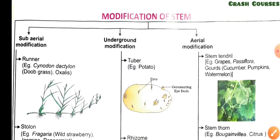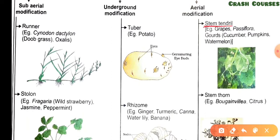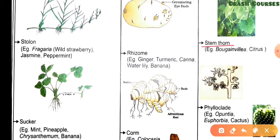Now come to aerial modification. The first type is stem tendril. In this, axillary buds form tendrils in place of branches and help in climbing for plants which have weak stems. Examples are grapes, Passiflora, and gourds such as cucumber, pumpkin, and watermelon. The next type is stem thorn, where the thorn develops from the axillary bud of the stem and may bear leaves and flowers. Examples are Bougainvillea and Citrus.